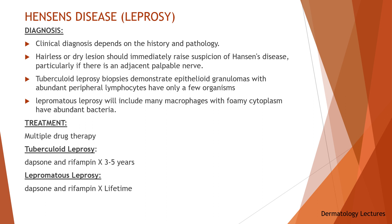A typical treatment course for Hansen's disease involves multiple drug therapy with dapsone and rifampicin for three to five years in patients with tuberculoid leprosy and for life in patients with lepromatous leprosy.